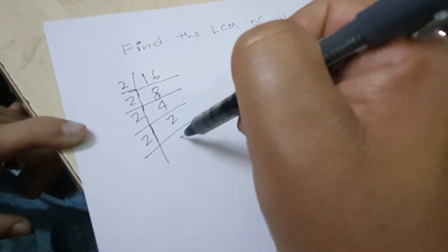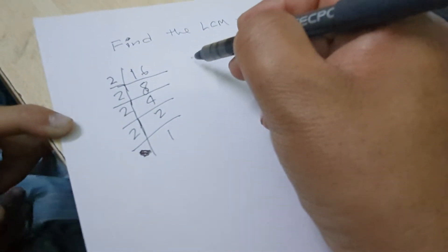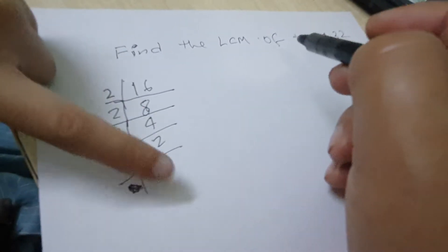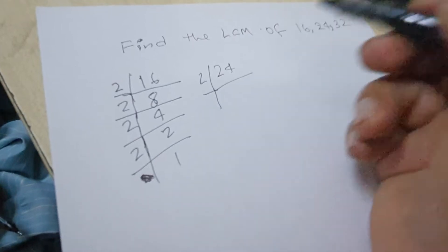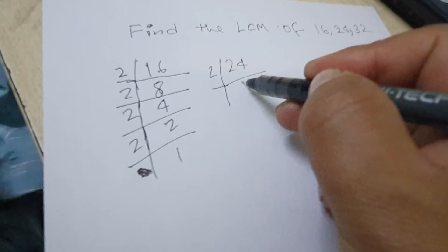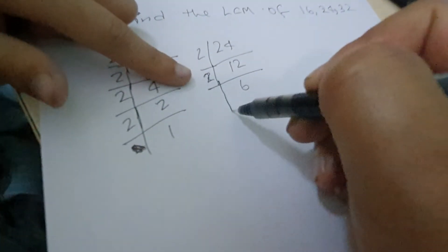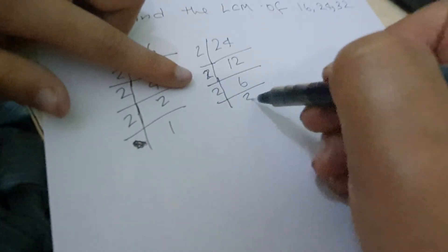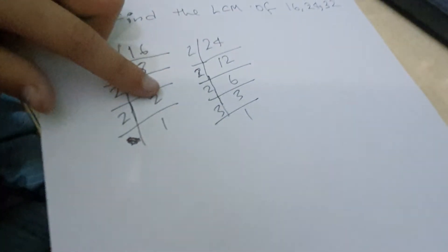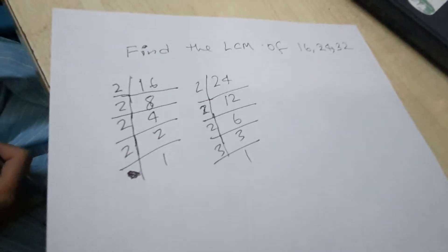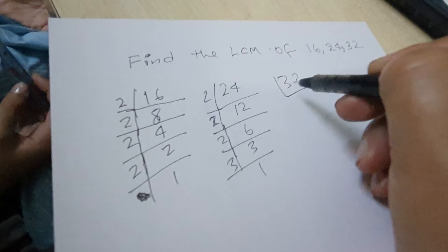Beginning the prime factorization: dividing by 2. 2, 2, 2, 2... 3, 3. 1. Prime. Time Number 32.